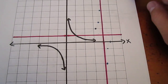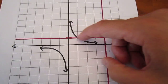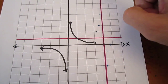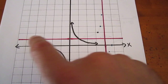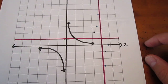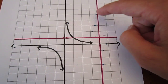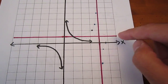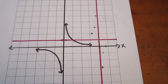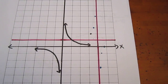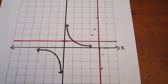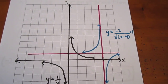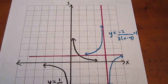We can then graph the parent function along with our new asymptotes and the six points from our chart method. Doing our best to maintain the integrity of the curve, we get something that looks like that.